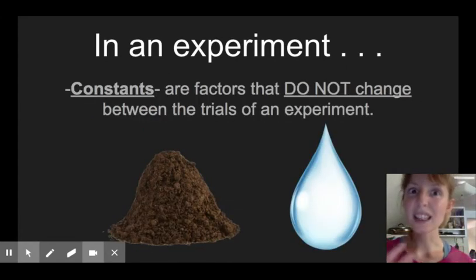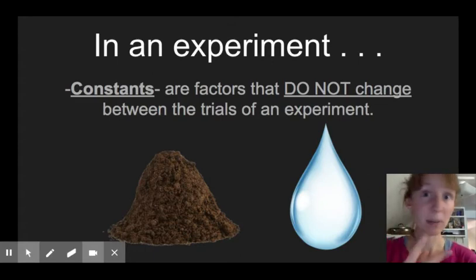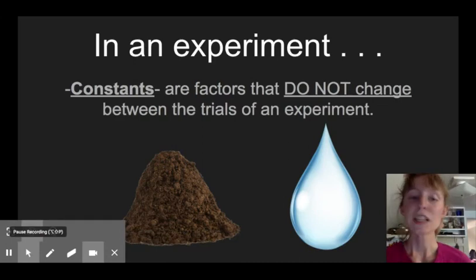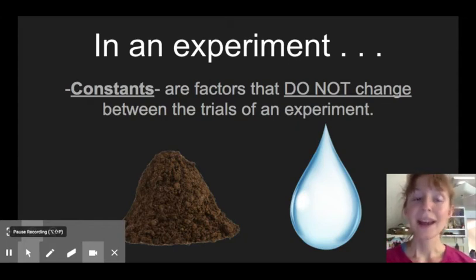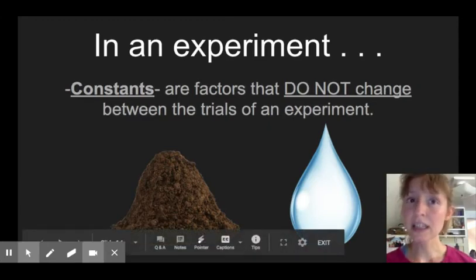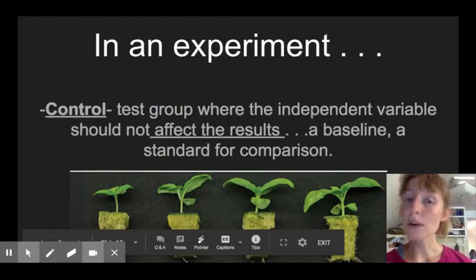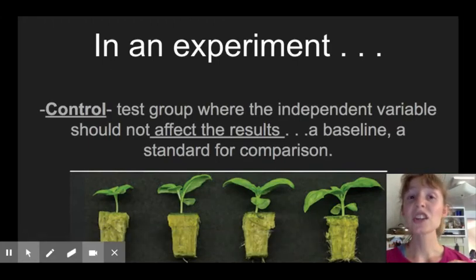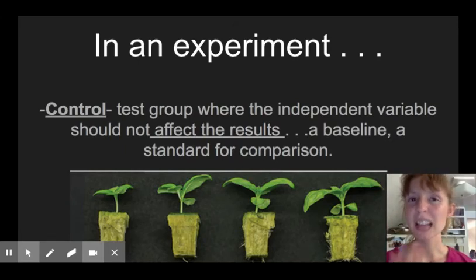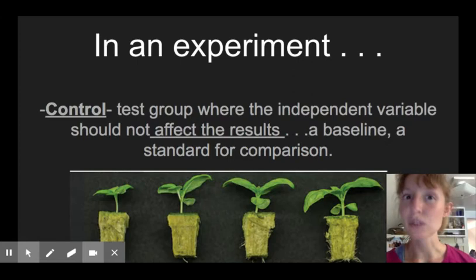In an experiment, you also want constants, which are factors that don't change. They're not the variables that you're studying. Remember, the question has two variables, light and plant growth in this experiment. So the constants would be not light and not plant growth, but other things that might affect the plant's growth. So you wouldn't want to give some plants more water than the other plants because then you might actually be testing how much water differences affect plant growth. And you wouldn't want to change the amount of soil that you give to different plants because then you might be testing soil instead of light. You want to keep things constant. The control group is going to be the test group where the independent variable should not affect the results. If you've ever heard of like a test of drugs and there being a placebo where some people just take a sugar pill that doesn't have any effect, that's a control group.